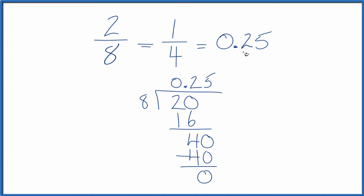The fraction 2 eighths is equal to 0.25. So we got the same answer both ways. If you divide 1 by 4, you'll also get 0.25.